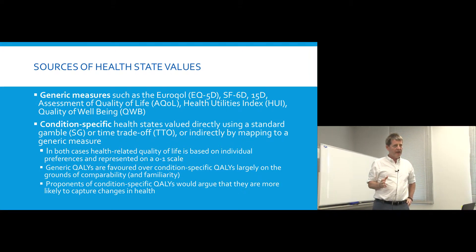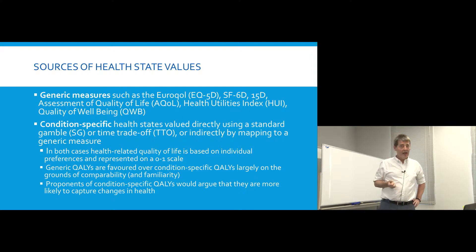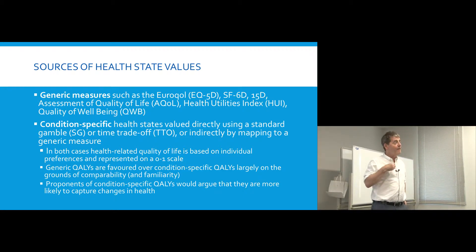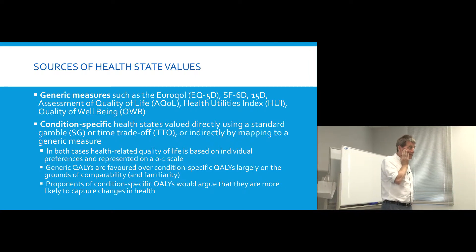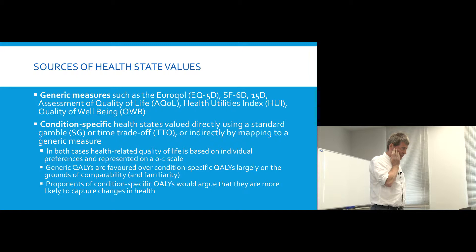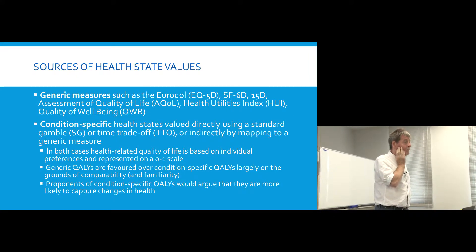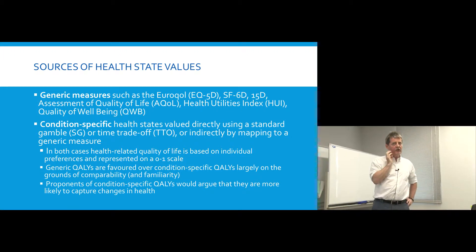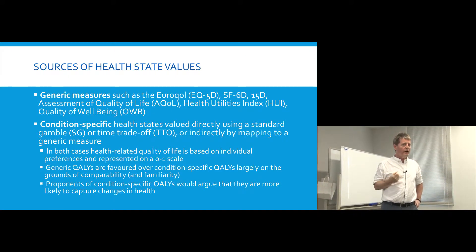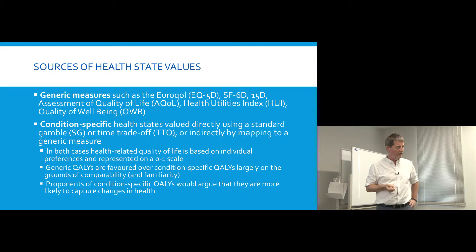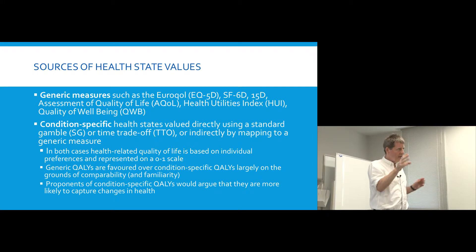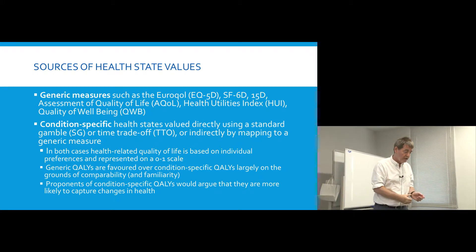The alternative to using a generic measure is to use condition-specific data — condition-specific health state descriptions — and to value those health states. You could value them directly using such measures as a standard gamble, or more likely the time trade-off, which I will be explaining. Or, instead of valuing condition-specific descriptions directly, you could value them indirectly by mapping — looking at the relationship between a condition-specific health state and a generic measure such as the EQ5D.